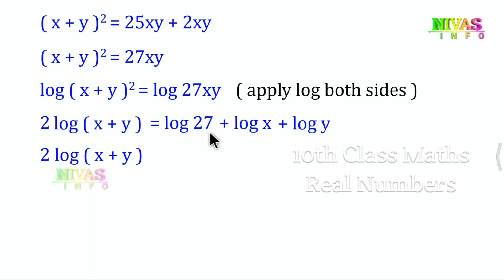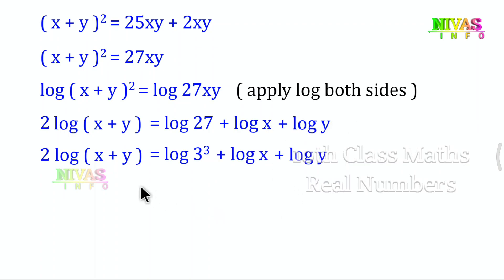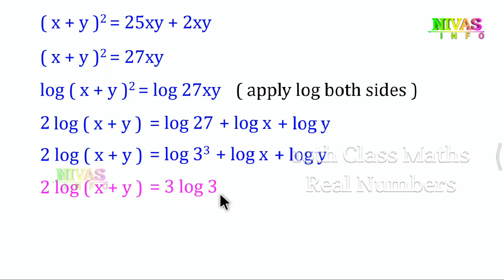Now we expand log 27. Since 27 = 3³ (because 3×3=9 and 9×3=27), log 27 = log 3 power of 3 = 3 into log 3. So the right side becomes 3 log 3 plus log x plus log y. Therefore: 2 log(x+y) = 3 log 3 + log x + log y.